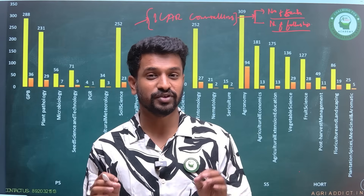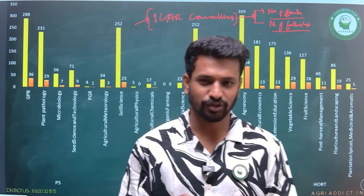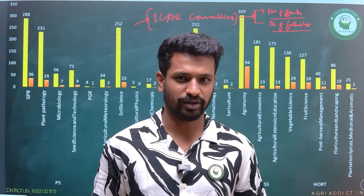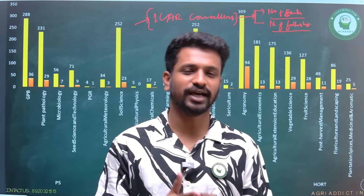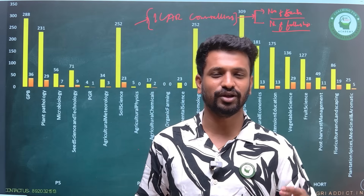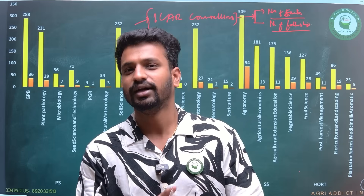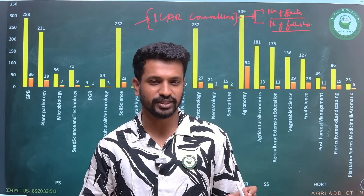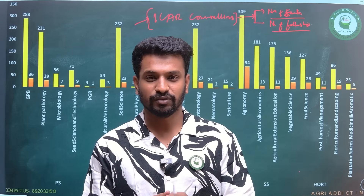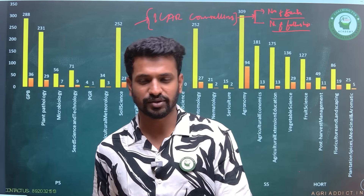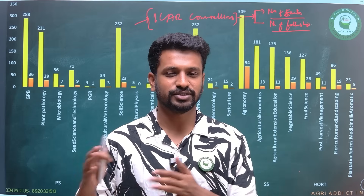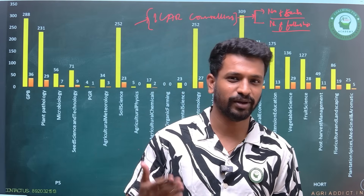This will be clearly mentioned in the counseling brochure, which is very important. Make sure that you apply for the choice filling correctly and in a proper order, because if you do not know how many seats are available in a particular university, you won't be able to easily decide which college or university you will be getting. Having clear information about the total number of seats, total number of PG fellowship seats, and seats available for your category in different agriculture universities will help you decide your priorities.